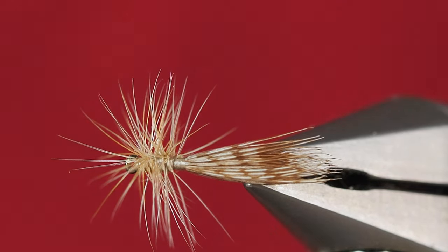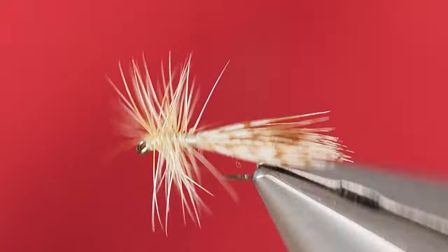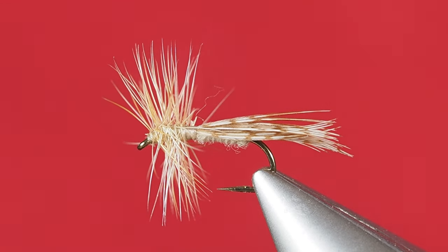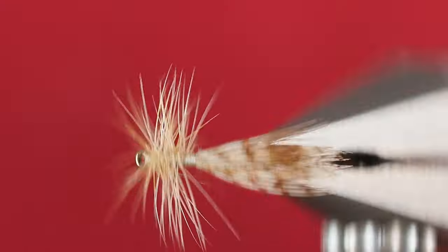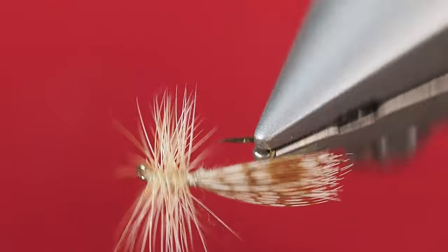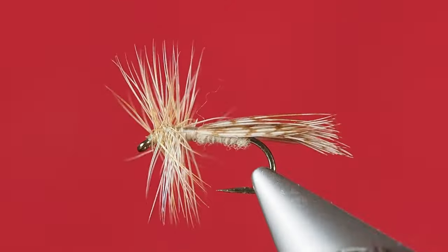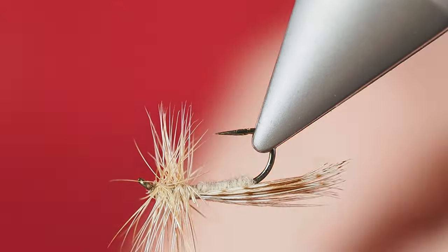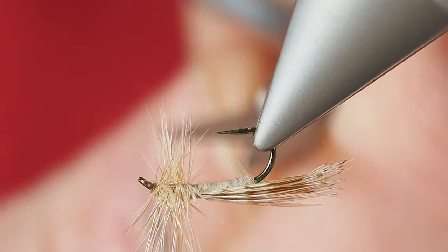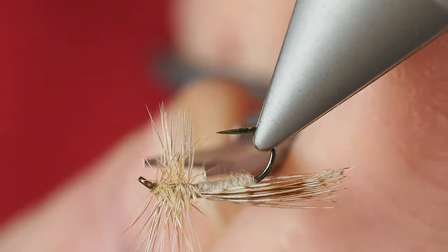After getting this nice and cleaned up, we've got a good looking fly. One thing that I've seen other tiers do and I like doing as well—the rotating feature is so nice—I'm going to turn this upside down and I'm actually going to go ahead and just give this guy a little bit of a haircut on the bottom.